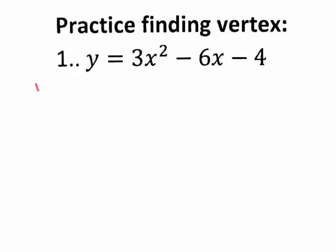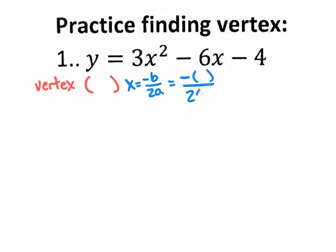So let's find the vertex. We know that the vertex is a coordinate, and we know that to find that coordinate, we're going to use the formula x equals negative b over 2 times a. And we know that when we use that formula, we're going to use parentheses when we plug in the b and the a value.